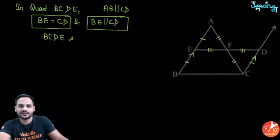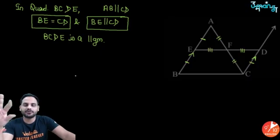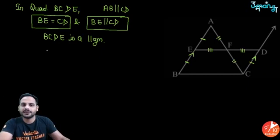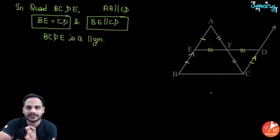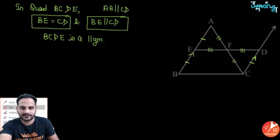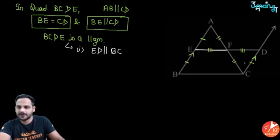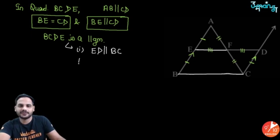Since BCDE is a parallelogram, opposite sides are equal and parallel. Therefore ED is parallel to BC, and since EF is part of ED, EF is parallel to BC — first result proved.